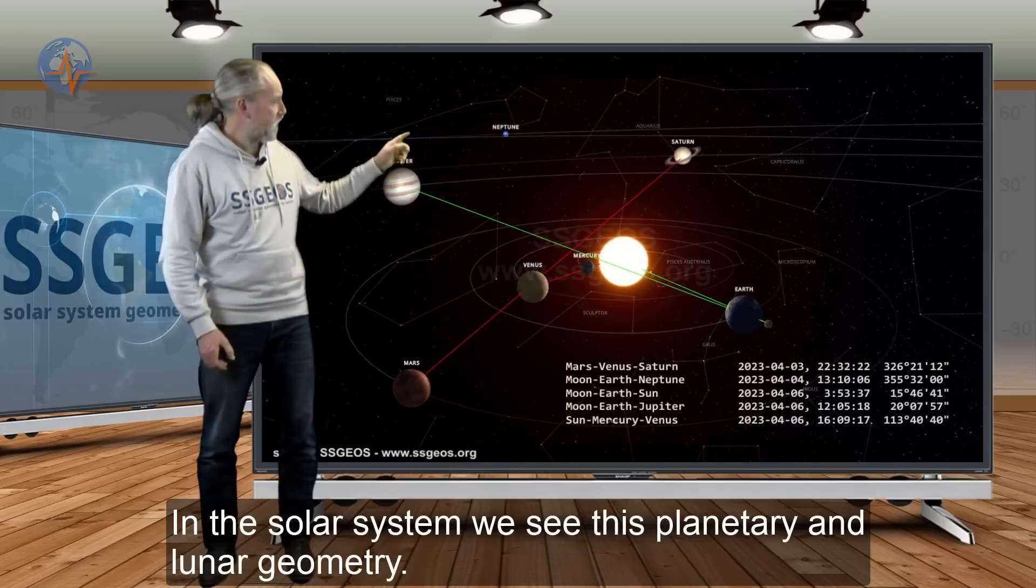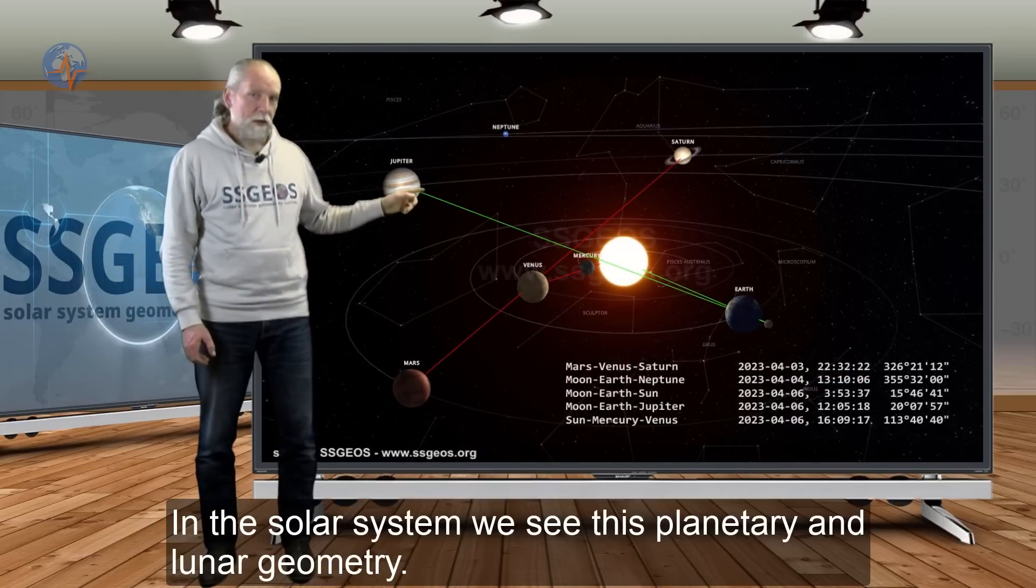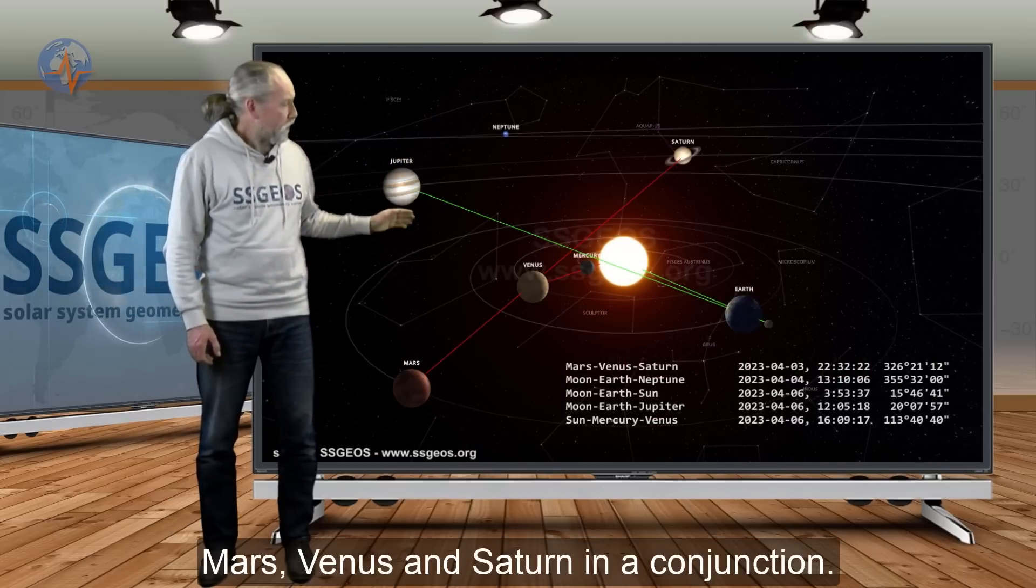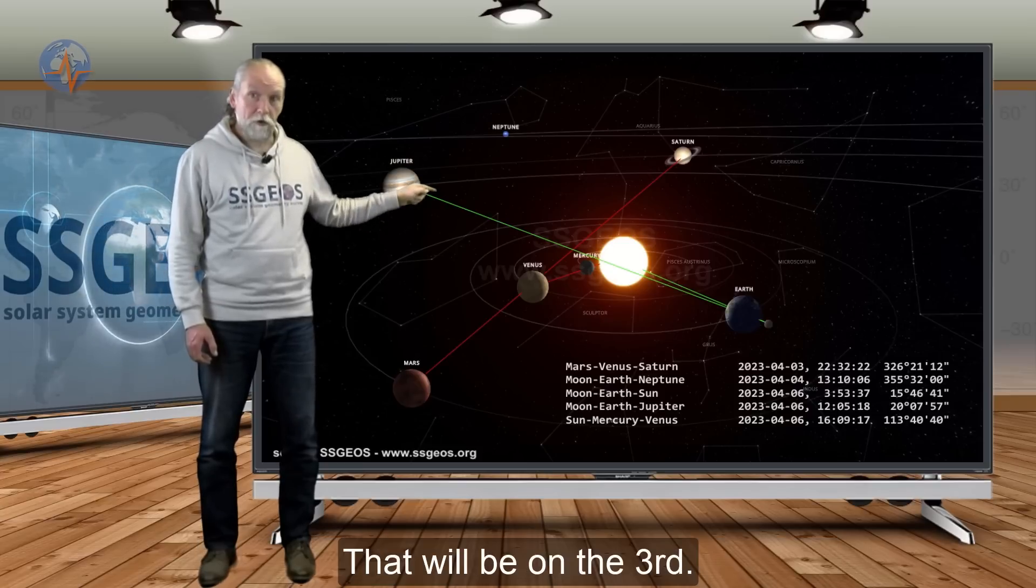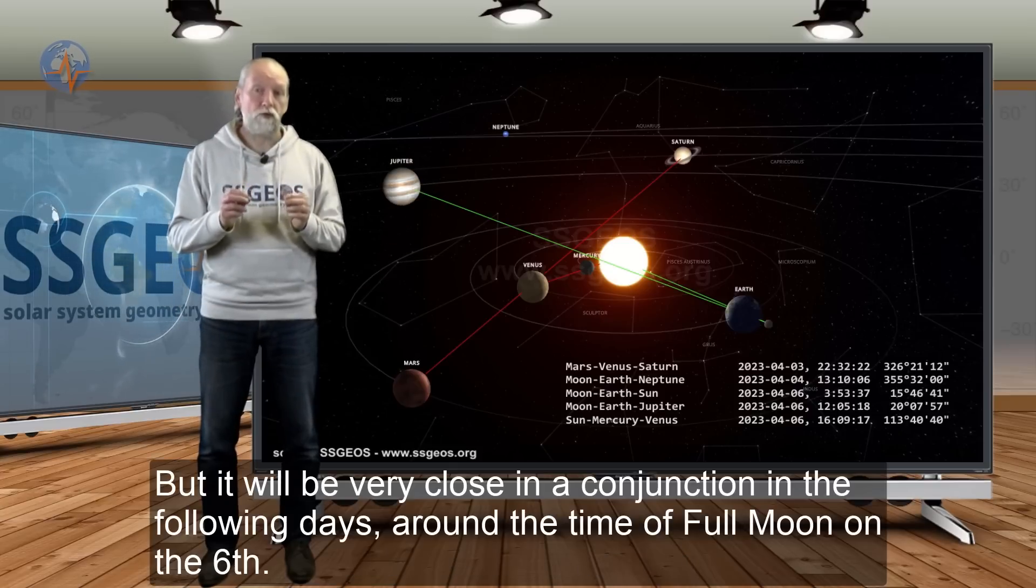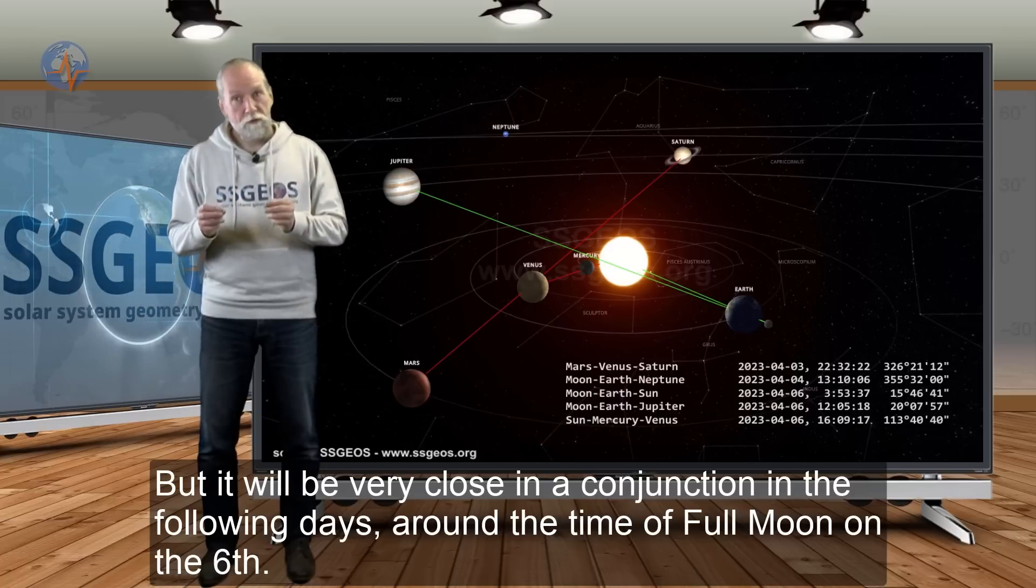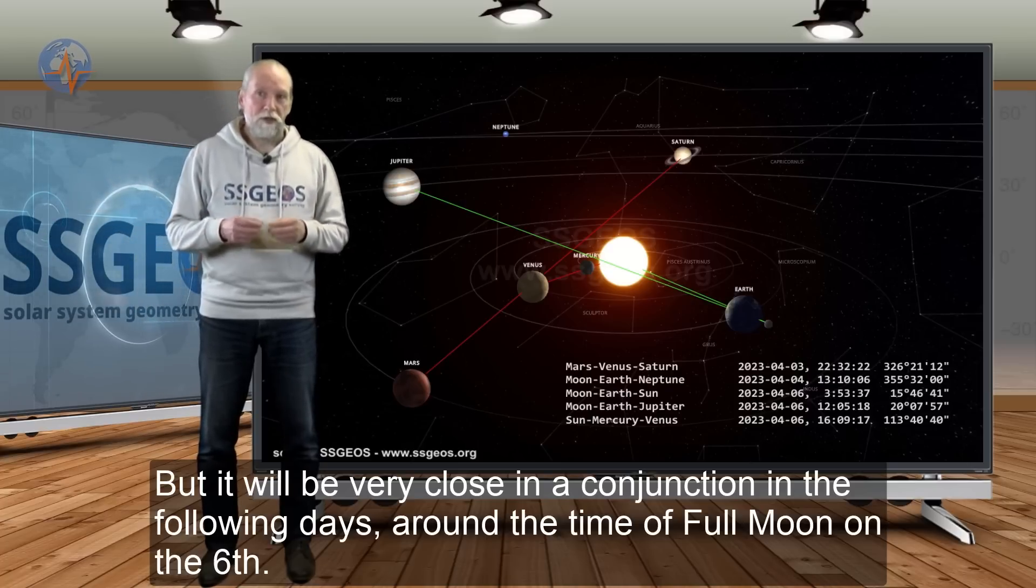In the solar system we see this planetary and lunar geometry: Mars, Venus, and Saturn in a conjunction. That will be on the 3rd, but it will still be very close in a conjunction in the following days, also around the time of full moon on the 6th.